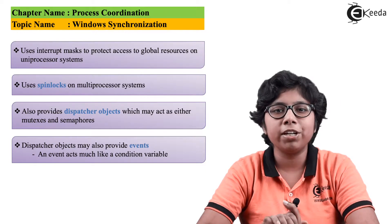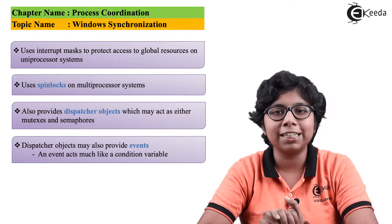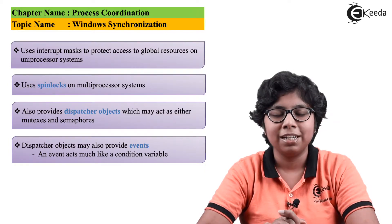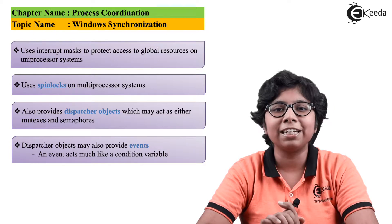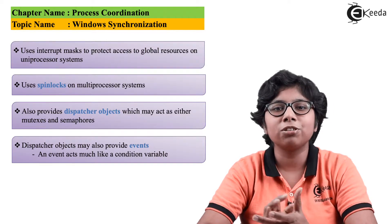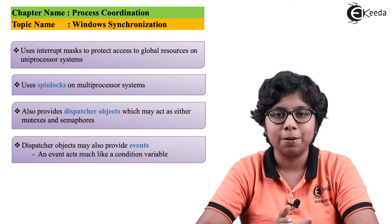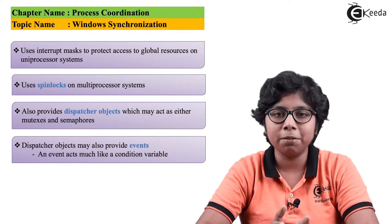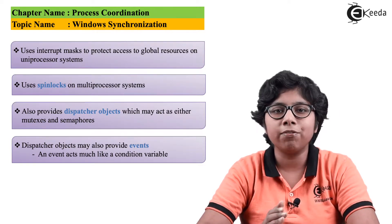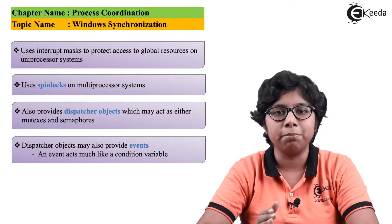In Windows synchronization, there is an object attached to synchronization known as a dispatcher object. The dispatcher object can use different mechanisms to synchronize between threads. These mechanisms can be mutex, semaphores, events, and timers.